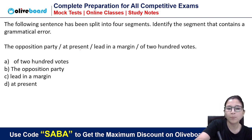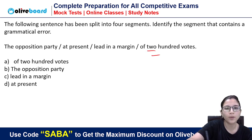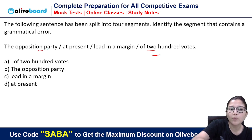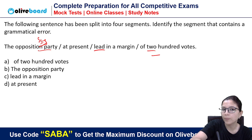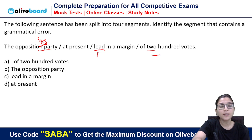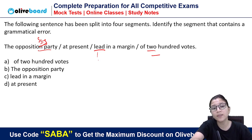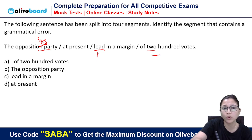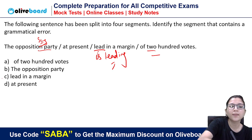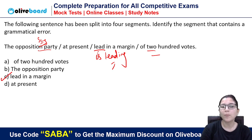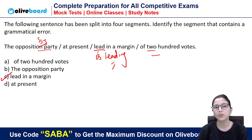Next: 'The opposition party at present lead in a margin of 200 votes.' The opposition party is singular, so when the subject is singular, we need a singular verb. The correct sentence is: 'The opposition party at present is leading with a margin of 200 votes.'